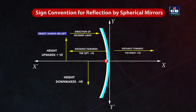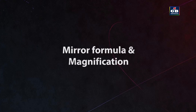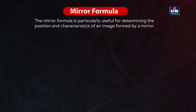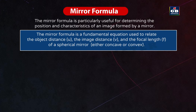These sign conventions are fundamental for analyzing and solving problems related to spherical mirrors. The mirror formula relates object distance (u), image distance (v), and focal length (f) of a spherical mirror.